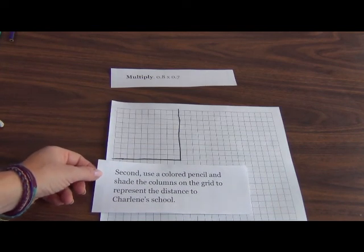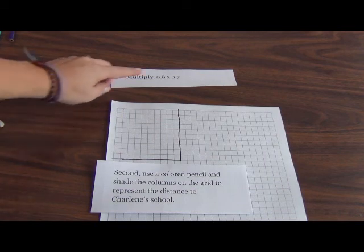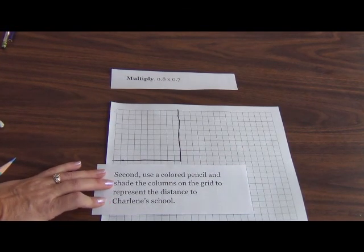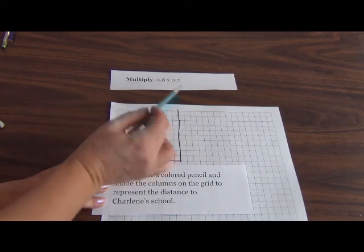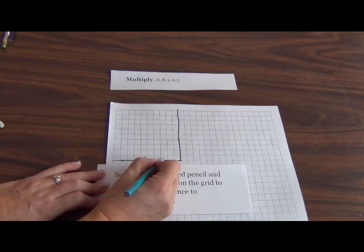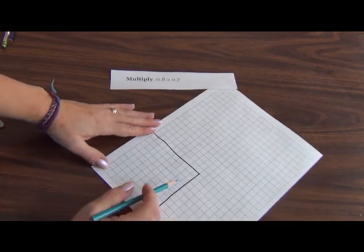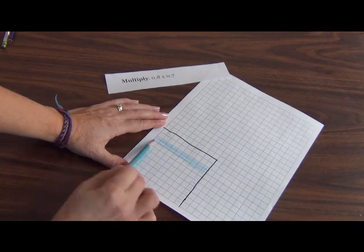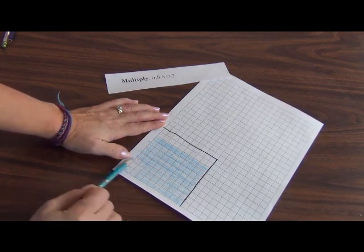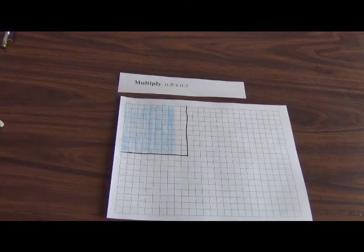Second, I'm going to use a colored pencil to shade the columns on the grid to represent the distance to Charlene's school. Remember what the distance was? It was 8/10 of a mile. We talked about it wasn't quite a whole mile. So I'm going to do 8/10 or 8 columns. I'm going to count them off here: 1, 2, 3, 4, 5, 6, 7, 8. There are my 8 columns and I'm going to shade them. There, that is representing 8/10 of a mile. We know that that's the distance to her school.